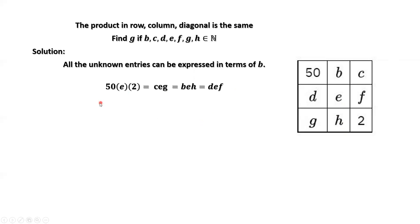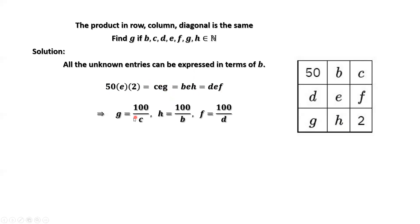Now, because each part has E, we can get rid of E. Then we can figure out the relationship between two unknowns. For example, the first one: solving the first equation, we have G equals 100 over C.